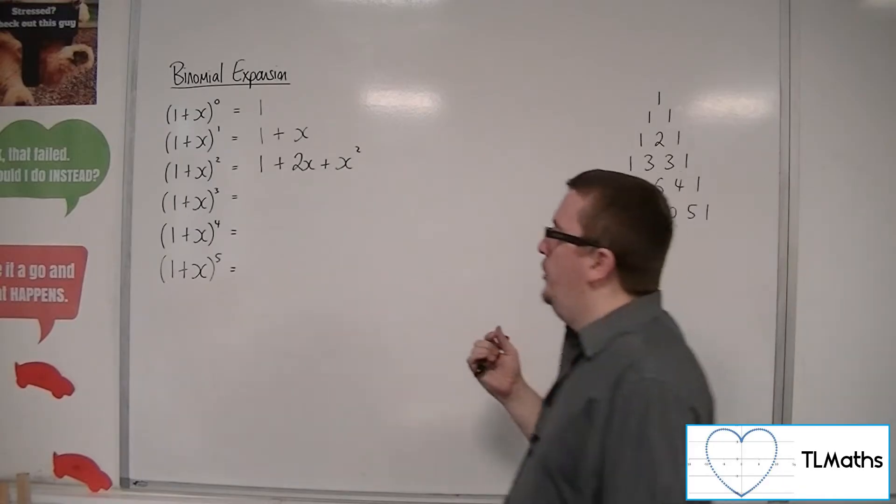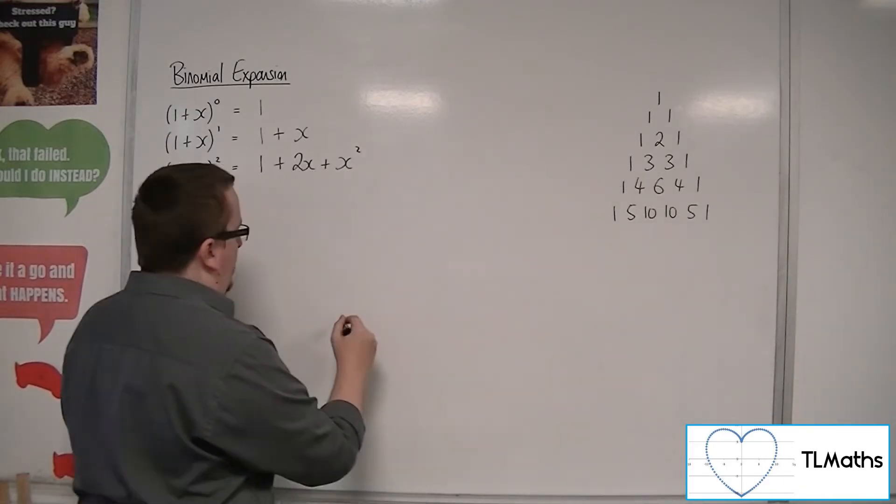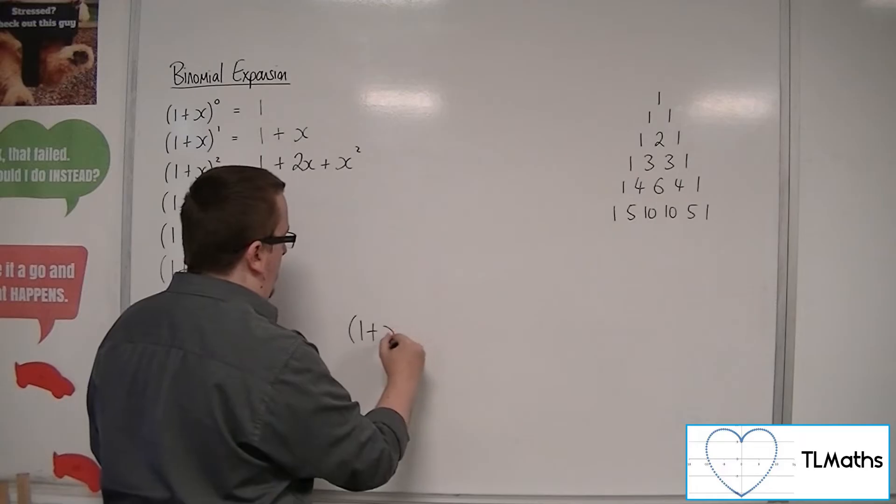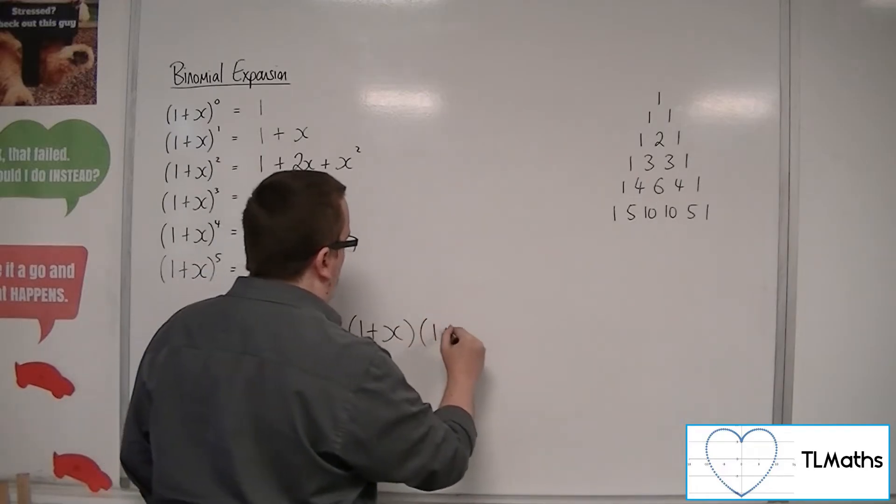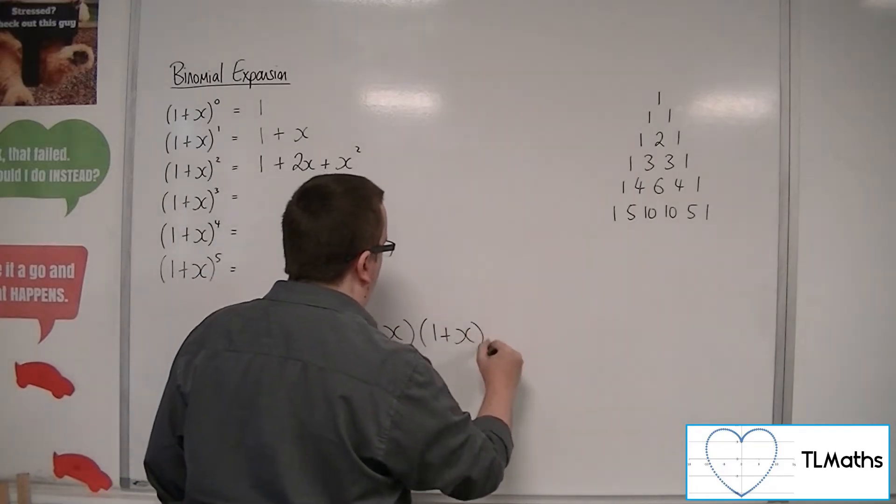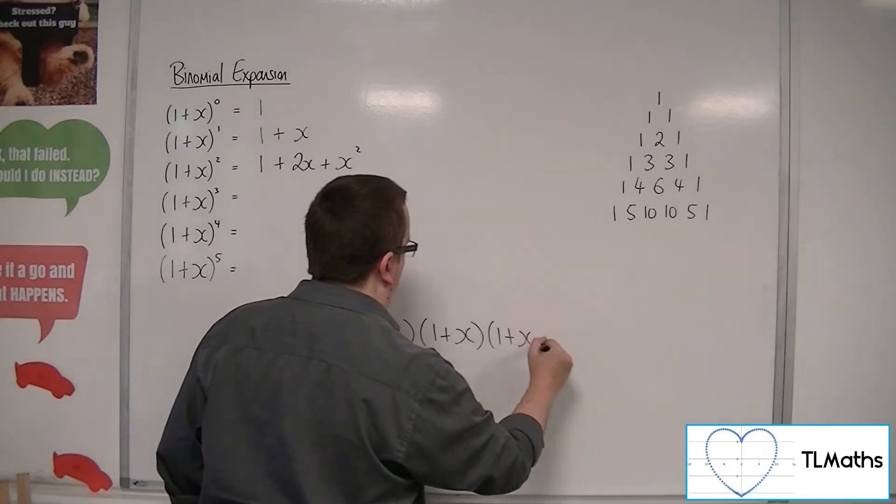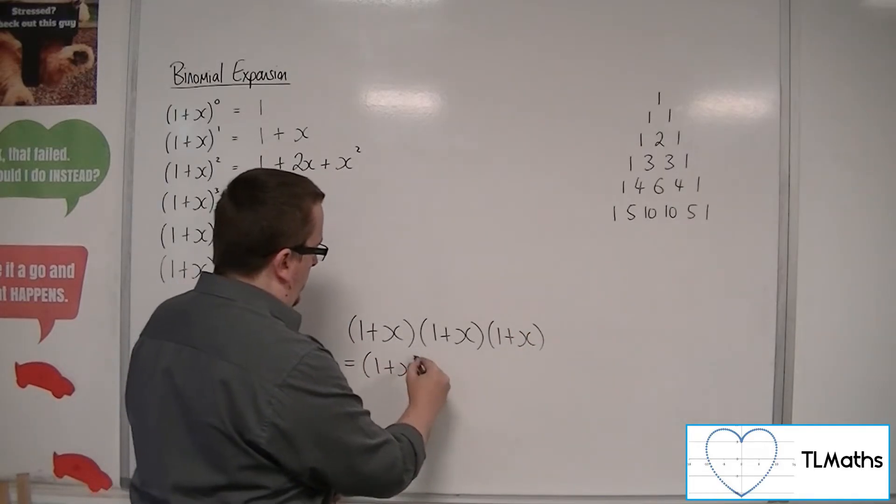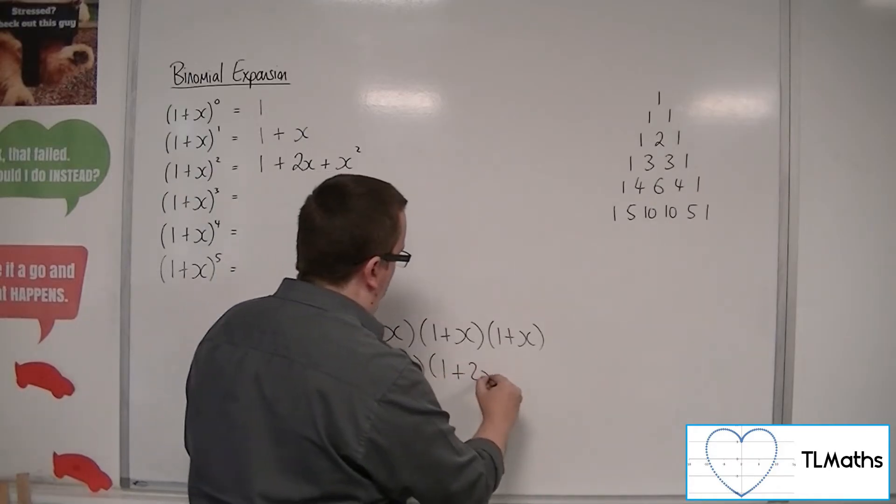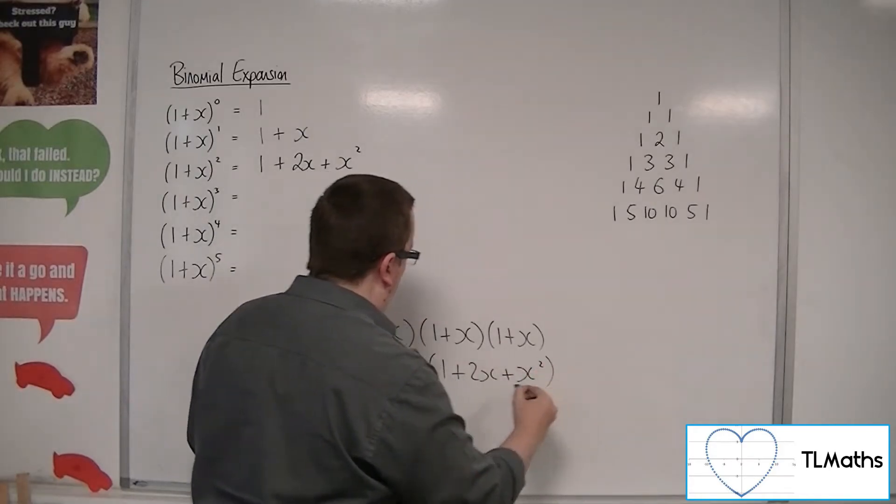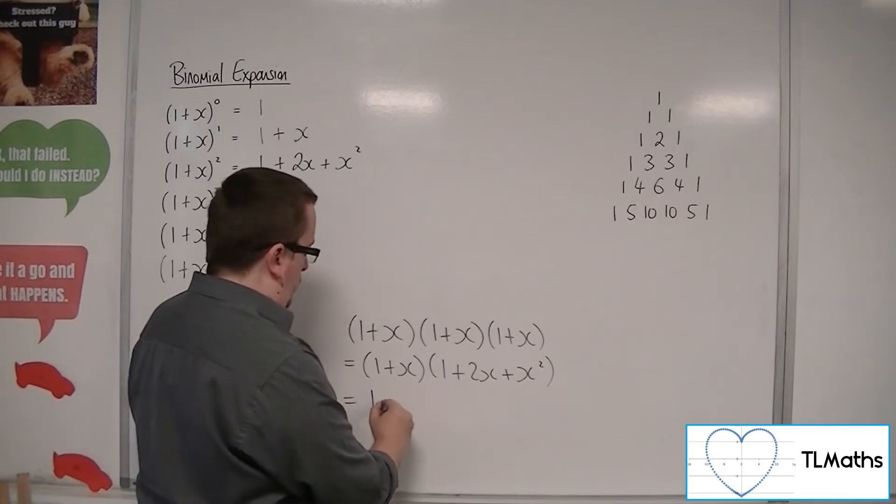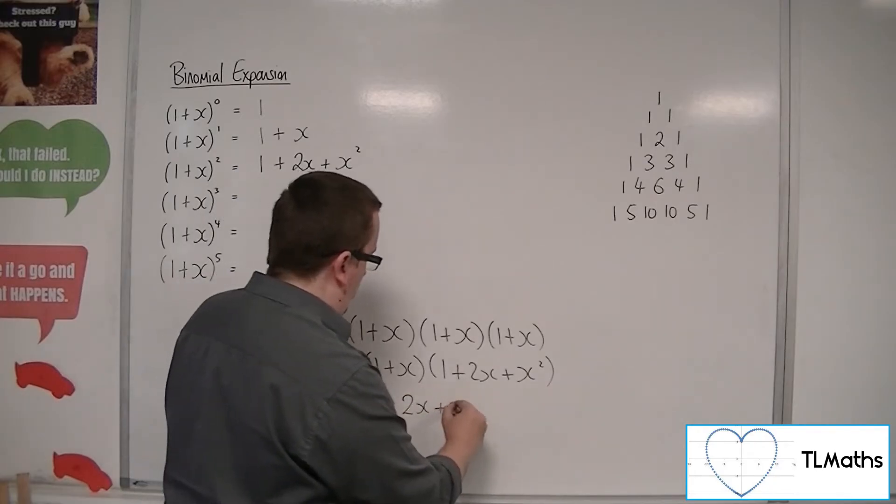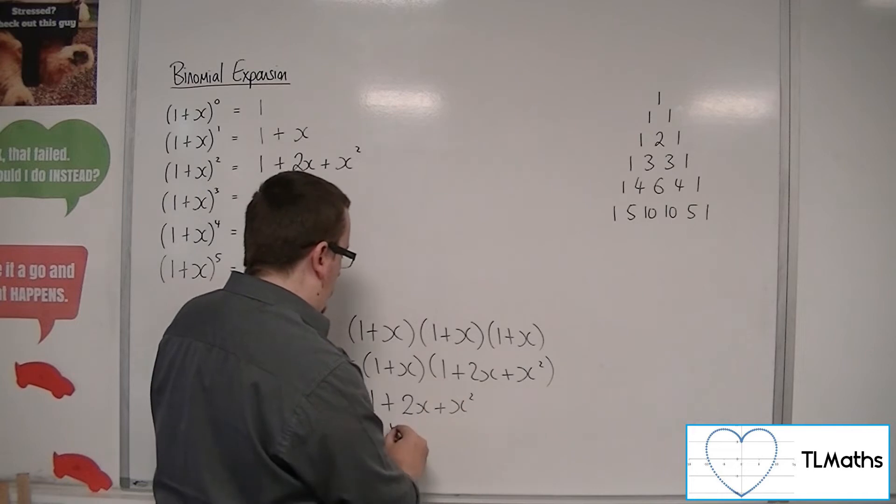Now (1+x)^3, well, we might have to do a little bit of expanding brackets down here. (1+x) times (1+x)^2. So (1+x) times (1+x) times (1+x). So that's (1+x) times (1+2x+x^2), which is 1+2x+x^2, plus...